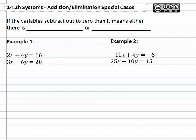So just as we saw before, if the variables subtract out to zero, it means there is either no solution (parallel lines who don't overlap) or infinite solutions (which would be when we have the same line right on top of itself).